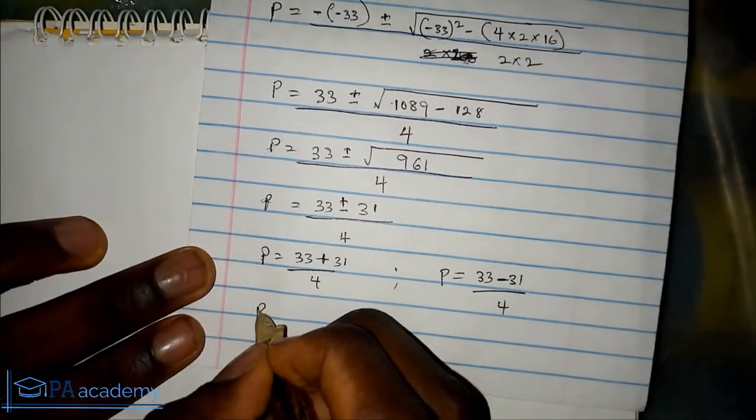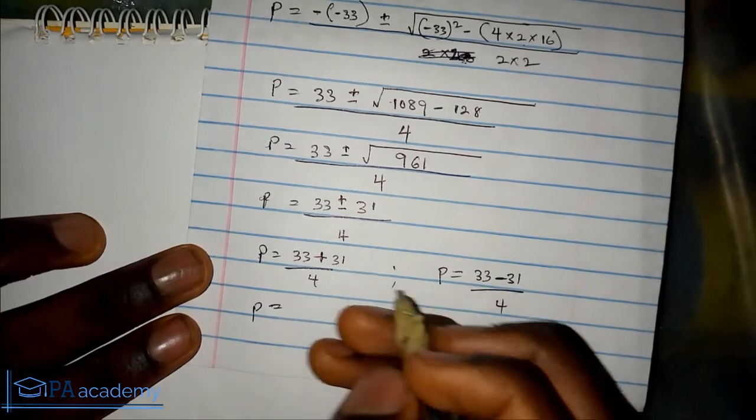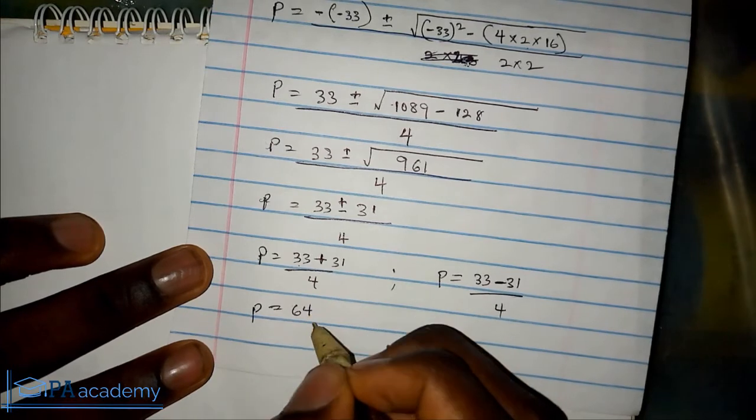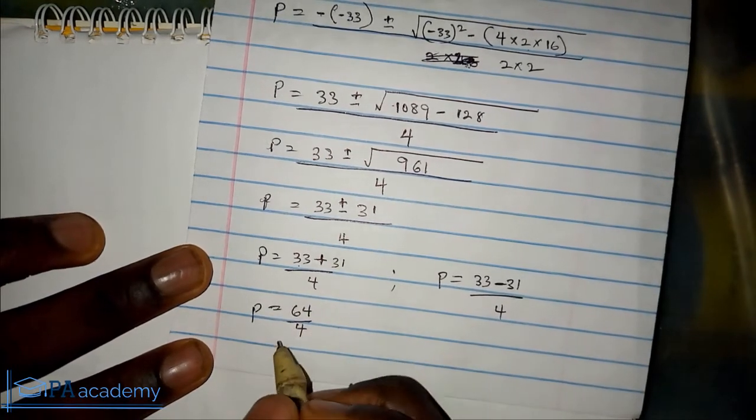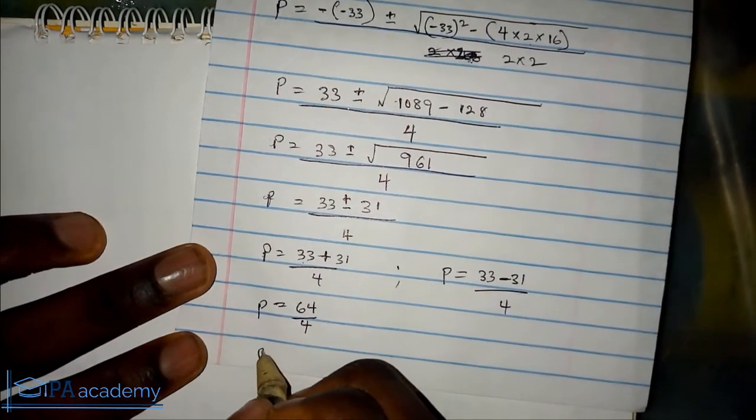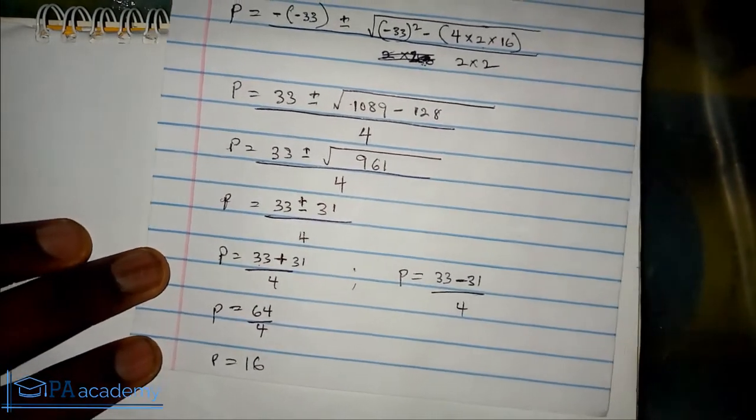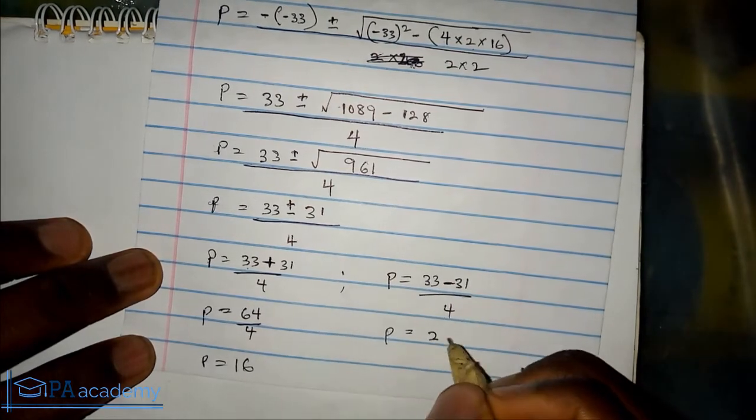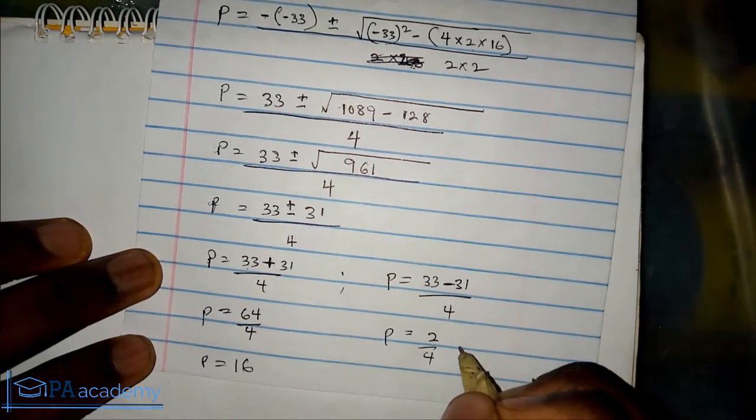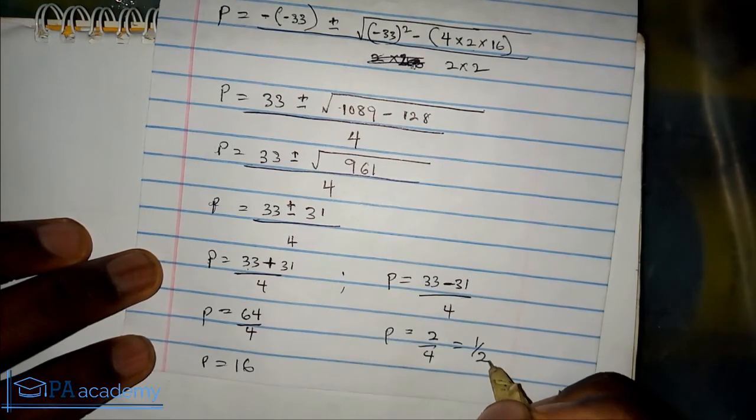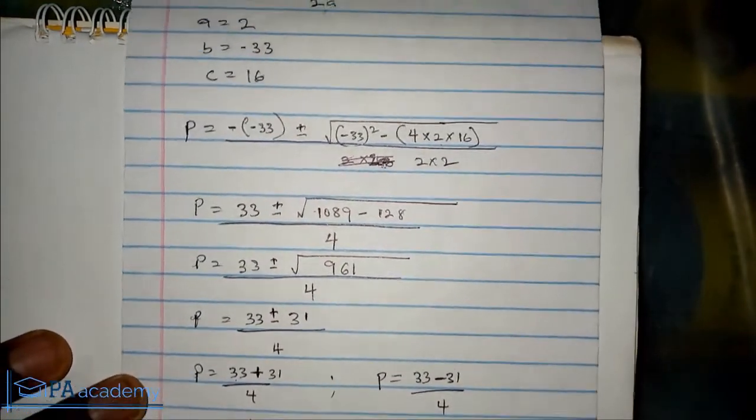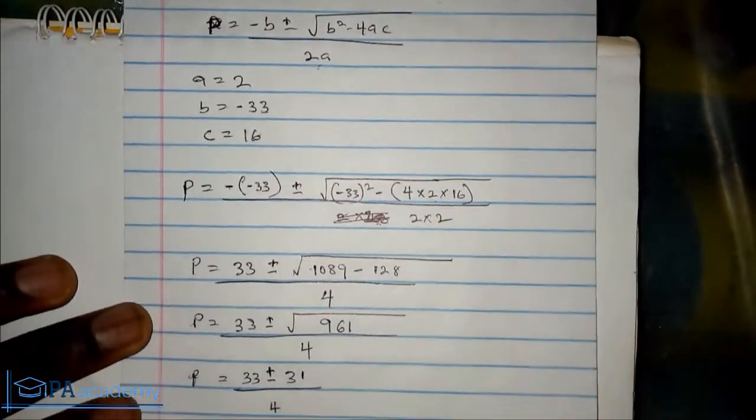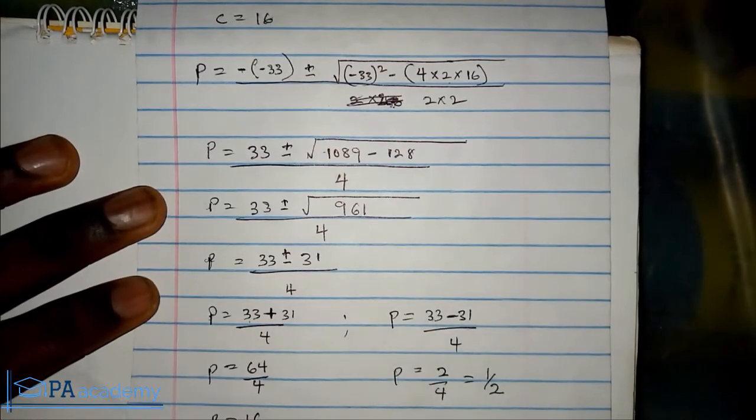From there our p will equal, 33 plus 31 gives us 64 over 4. 64 over 4 means our p here is 16. For this one, p is 33 minus 31, which is 2, so 2 over 4. 2 over 4 gives us 1 over 2. Using quadratic formula, we've been able to find the value of p, which is 16 and 1 over 2.